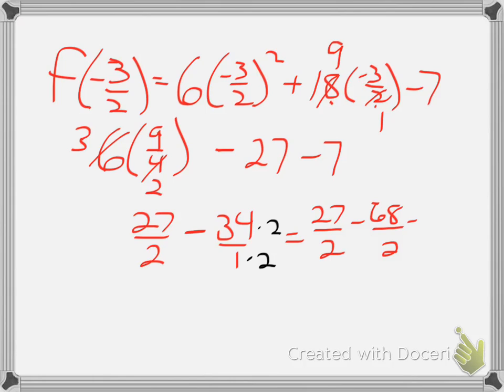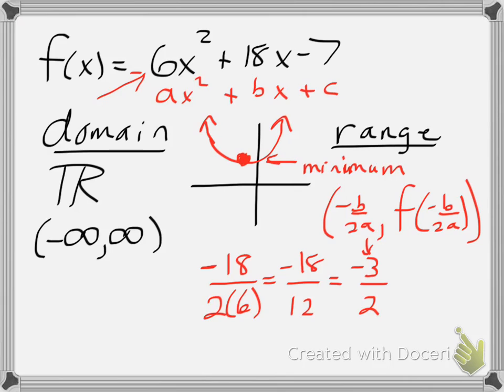Which gives me negative 41 over 2. So my vertex is negative 3 halves, negative 41 over 2, which means, looking back at my graph, since this is the minimum value, negative 3 halves, negative 41 halves, and everything is bigger than that point.